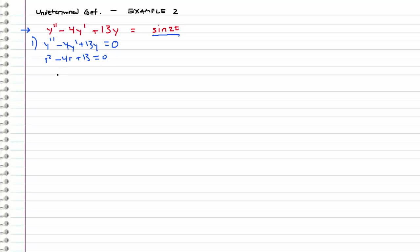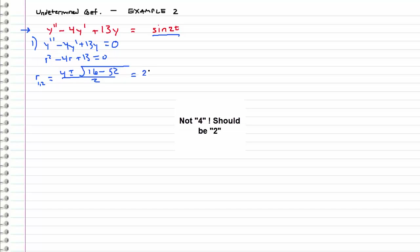Does this factor? Nope. So let's use the quadratic formula: 4 plus or minus the square root of 16 minus 4 times 13, which is 52, all divided by 2. We have 16 minus 52, which is negative 36. The square root of negative 36 is 6i. Dividing everything by 2 gives us r equals 2 plus or minus 3i.